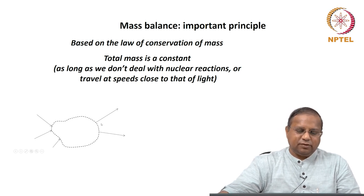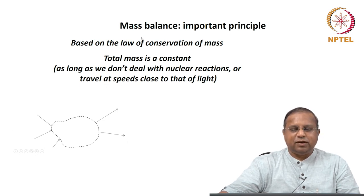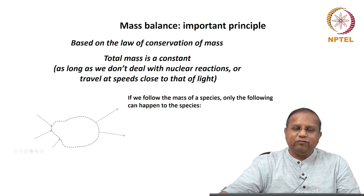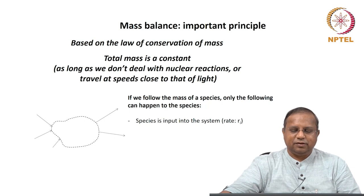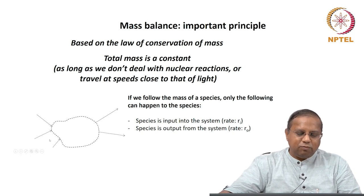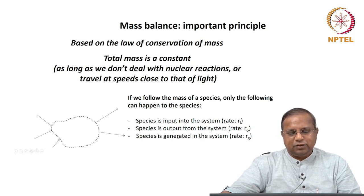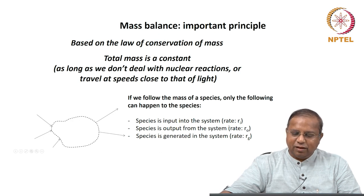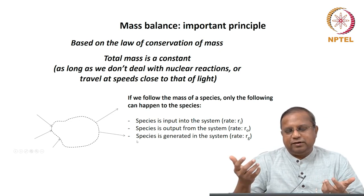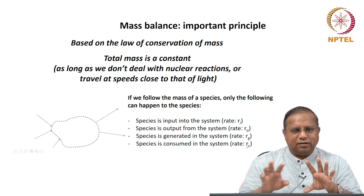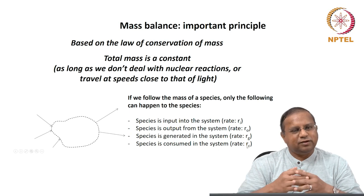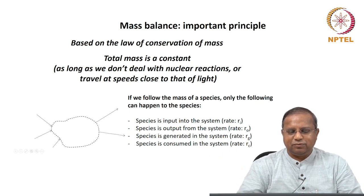There could be various inputs and outputs of mass to and from the system. If we follow the mass of a species, only the following can happen: the species comes into the system crossing the system boundaries at a rate of r_i; it is output from the system at a rate of r_o; it could be generated in the system at a rate of r_g; or it could be consumed in the system at a rate of r_c. These are the four things that will happen to the mass of a species.